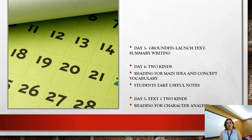On day four, we are going to start with "Two Kinds," a great short story. We will read for main idea and concept vocabulary, and you will take useful notes within class. On day five, we are going to continue with "Two Kinds," this time reading for character analysis — analyzing character traits, character motives, and how they react throughout the story to understand more about them. We are also going to explore the author's point of view.